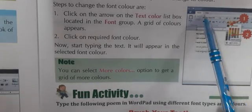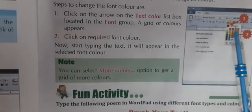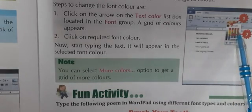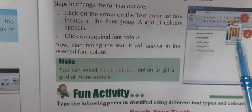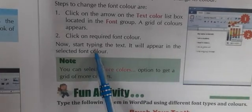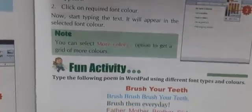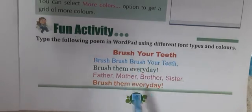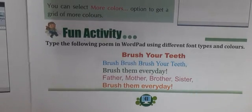I will show you again. First we will go to the Home tab, then in the font group we will select the text color option. We will click on that, then the color palette will appear, and we can select any color. After that, when I start typing the text will be in the selected color. You can choose any color. This is how we can change the color of the text.